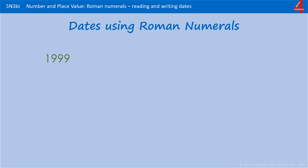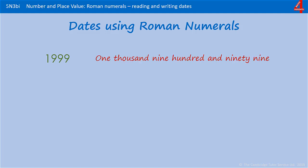But how did we cope before the millennium? The easiest way to think about dates is to just think of them as numbers. Think of the year 1999 as the number 1999. If you use your partitioning, you have 1999. Now it's much easier to identify which Roman numeral goes with which digit of the number 1999.